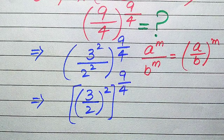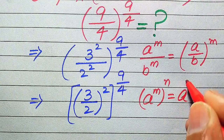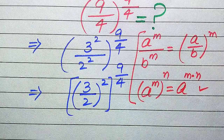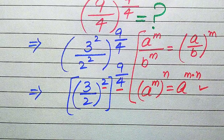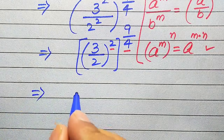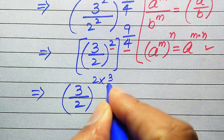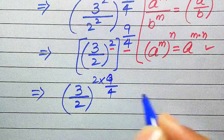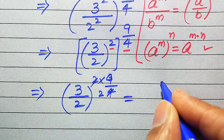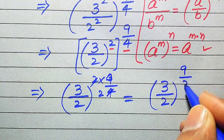We use another exponential law: a to the power of m, to the power of n, equals a to the power of m multiplied by n. Applying this rule, we multiply the two exponents: (3/2) to the power of 2 multiplied by 9 over 4. Since 2 times 9/4 simplifies — 2 times 2 becomes 4 — we obtain (3 divided by 2) to the power of 9 divided by 2.